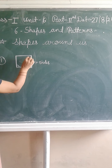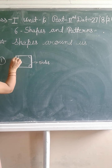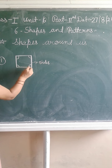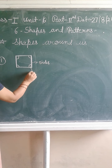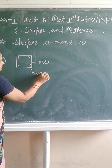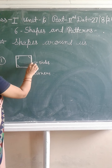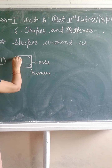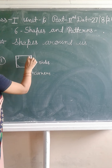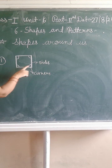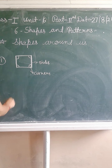Square has 4 corners — 1, 2, 3, 4. The lines that form the square are called sides. Square has 4 sides.